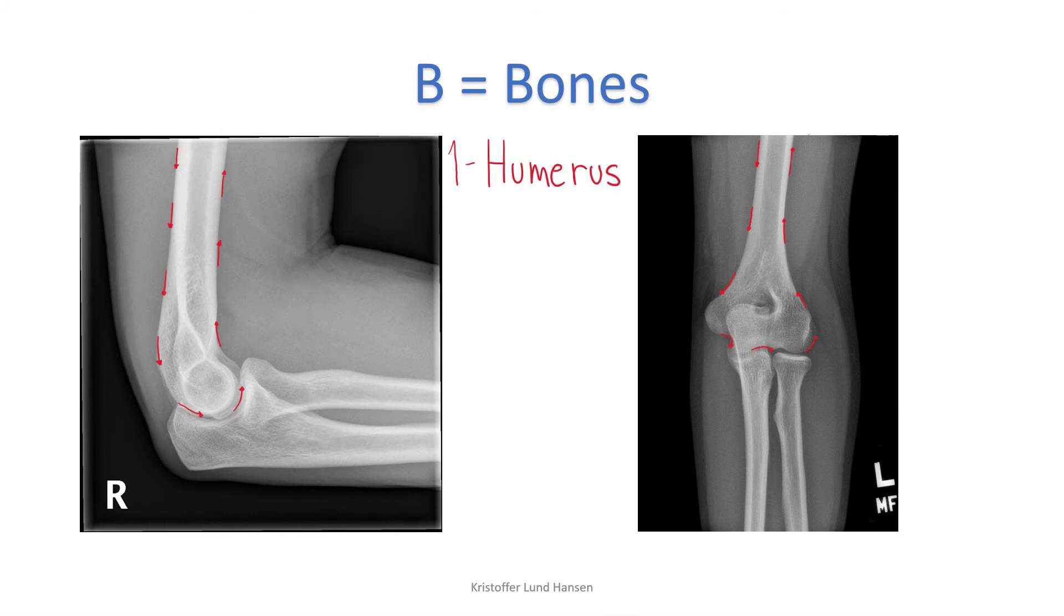First, do the humerus. Start from one side at the most proximal part. Which side it is doesn't matter, but continue all the way around until you're done with the whole bone. It is really important to scan the cortex of the whole bone, as otherwise it is easy to miss out on a possible fracture. Second, you go with the ulna. Again, start with one side and scan it all the way around. Lastly, you have the radius, and you do the same thing. Start on one side and scan it all the way around.